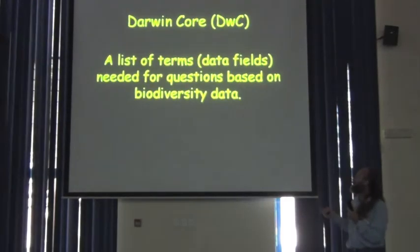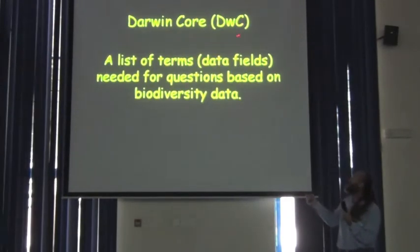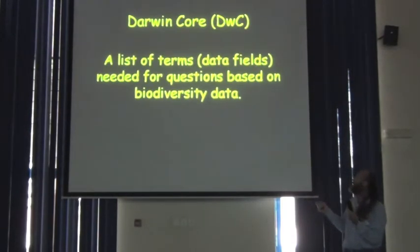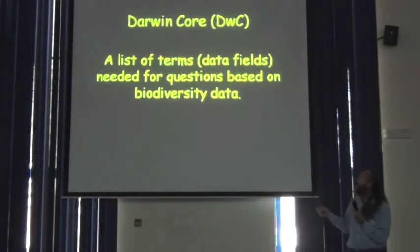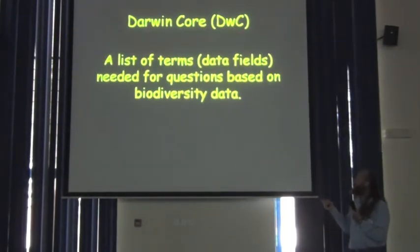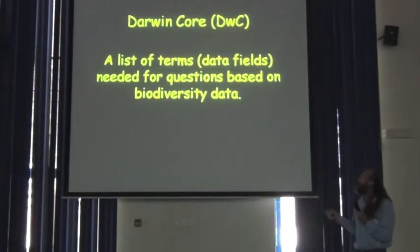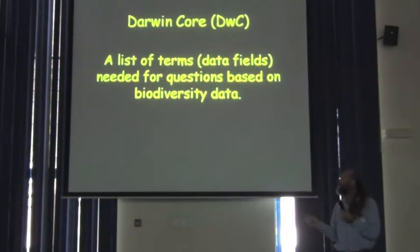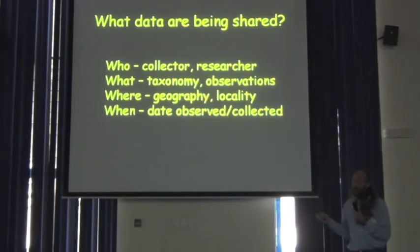The Darwin Core, which we abbreviate as DWC, to distinguish it from another standard, the Dublin Core, which uses just DC, is a list of terms — which might be called data fields in other contexts — that are needed for observations based on what taxon they are. So they're basic.